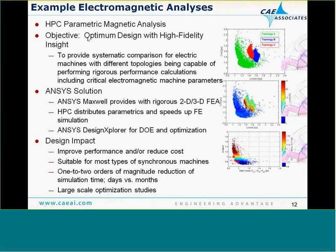As I mentioned, parametric and HPC analysis — we can use as many cores as you have to run different parametric variations simultaneously. If we're looking at dozens of different parametric variations and we have dozens of cores, we can run them all simultaneously and reduce our solution time from months down to days.